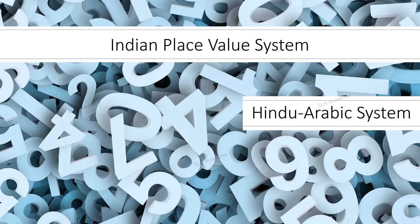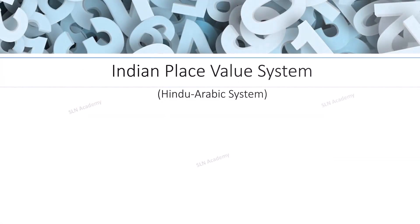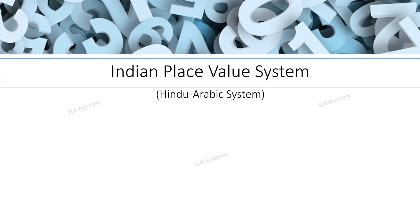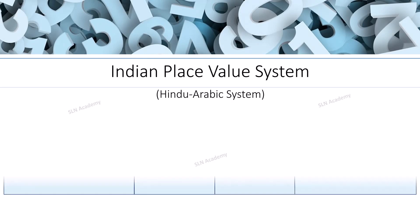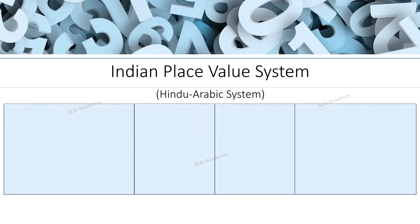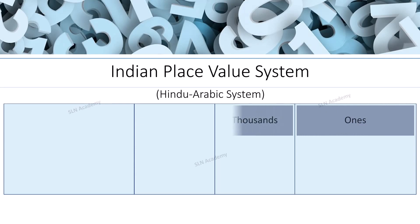The Indian place value system is also known as the Hindu-Arabic system. Let us first start with writing the Indian number system place value chart. The digits of your number are separated into groups called periods.